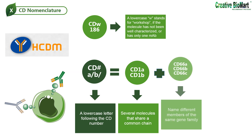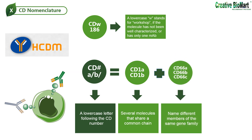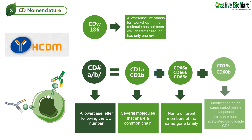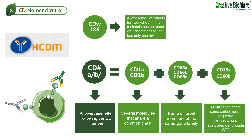In other cases, lowercase letters have been used to name different members of the same gene family, as is the case with CD66, CD66A, CD66B, CD66C, CD66D, CD66E, and CD66F. With regard to carbohydrate CD structures, a lowercase suffix represents a modification of the same carbohydrate sequence; for example, CD15s equals sialylated CD15 Lewis antigen, and CD60B equals 9-O acetylated ganglioside GD3.